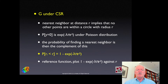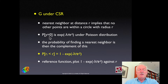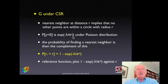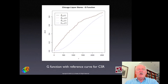Under complete spatial randomness, having a nearest neighbor at distance r means that in the circle with radius r around the event there are no points. Using the Poisson distribution, the probability of having no points in that circle is the negative exponential of the intensity λ and the area of the circle, π r². The probability of having a nearest neighbor is therefore 1 minus this negative exponential. It becomes very simple to plot this reference function — 1 minus the negative exponential — against the distance r, and to that reference we compare our actual distribution.